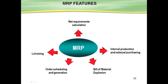One important thing: suppose after running MRP you find you require only one RAM, but in the market RAM is not available as a single unit — you have to buy in a lot of 100. You cannot buy just one because it's either unavailable or very costly. These situations are controlled through lot sizing. You define your lot size as 100, so whether your requirement is 1 or 99, the system will create an order for 100, because you've defined the economic order quantity as 100. This is called lot sizing.